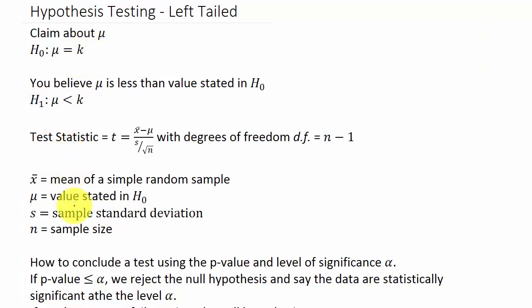A left-tailed test would look like this, and that's the probability we need. Our test statistic, because sigma is unknown, we have to use the student's t distribution. Our test statistic is t equals x bar minus mu over s divided by the square root of n with degrees of freedom n minus 1.